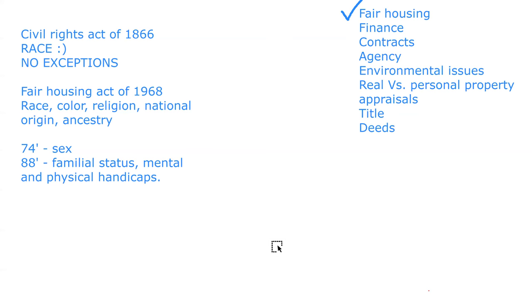A trade fixture is something used for a business — like a dentist chair, a barber shop chair, or sinks and basins at a nail salon. Another example is a bolted-down freezer at a grocery store — that's a trade fixture. The law views those as personal property of the business, meaning those items go with the business when they vacate the lease, as long as they restore the property to the way they found it.